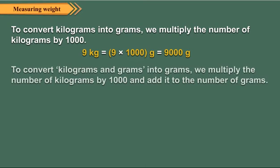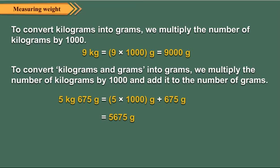Now, to convert kilograms and grams into grams, we multiply the number of kilograms by 1000 and add it to the number of grams. Let us now convert 5 kilograms, 675 grams into grams.